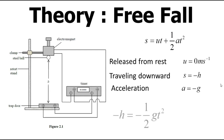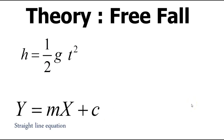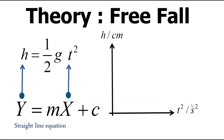If we substitute all the values into the equation, we get: negative h equals negative ½gt². We can cancel out the negatives on both sides, giving us h = ½gt². Comparing this with a straight line equation, h represents the y-axis, and t² represents the x-axis. Because we don't have a constant c, there is no y-intercept, so the graph should start at zero.